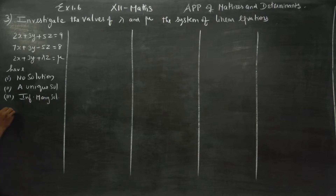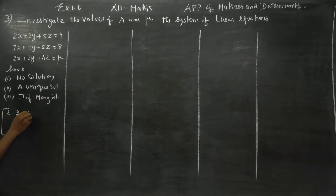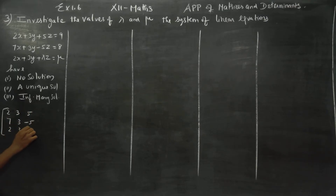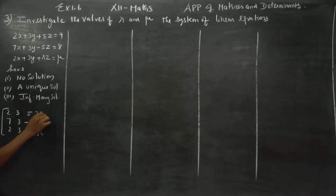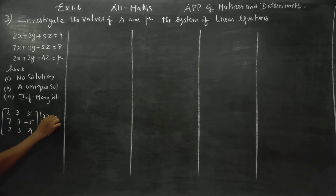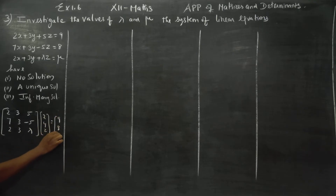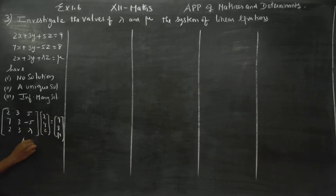Stage 1: I am going to change this into matrix form. The matrix is: row 1 — 2, 3, 5; row 2 — 7, 3, minus 5; row 3 — 2, 3, lambda. With variables x, y, z and right-hand side values 9, 8, mu. Name this as A, x, and B.